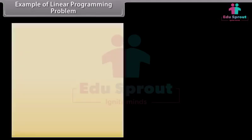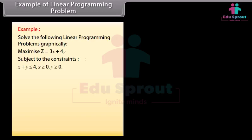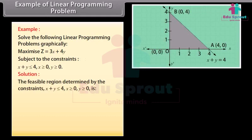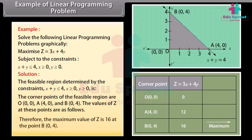Example: Solve the following linear programming problem graphically. Maximize Z equals 3X plus 4Y, subject to the constraints X plus Y less than or equal to 4, X greater than or equal to 0, Y greater than or equal to 0. Solution: The feasible region determined by the constraints is given in the figure. The corner points of the feasible region are O(0,0), A(4,0) and B(0,4). The values of Z at these points are computed, and therefore the maximum value of Z is 16 at the point B(0,4).